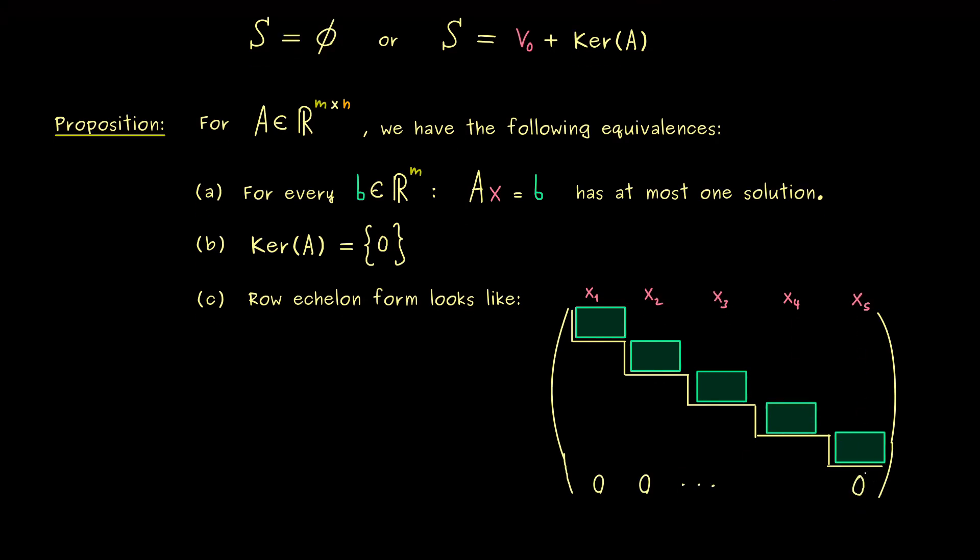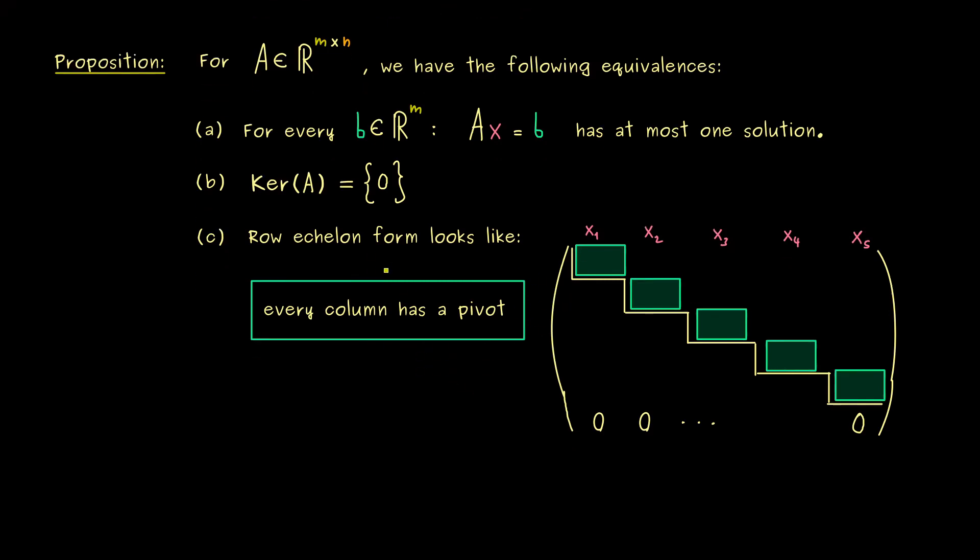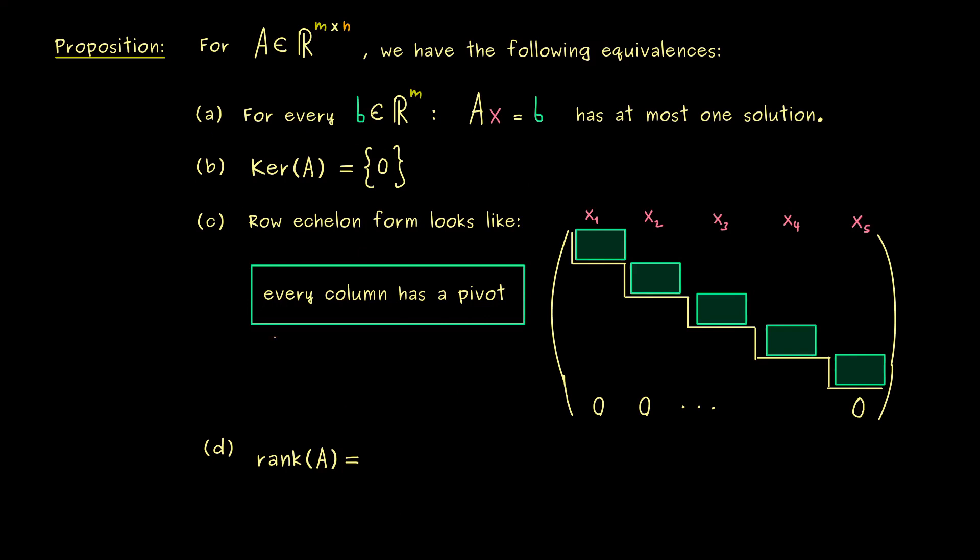However, of course zero rows at the bottom are still allowed. So it's not a statement about the rows, it's a statement about the columns. So you could also say the number of pivots is exactly n. However, we also already know that the number of pivots gives us the rank of A. Therefore, we immediately can write down the next equivalence as rank(A) = n.